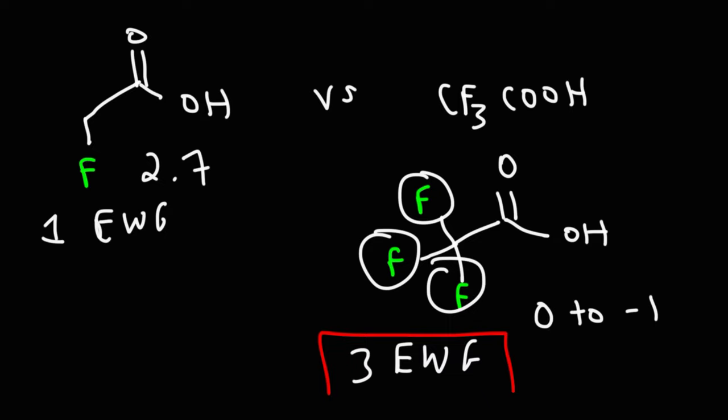Those are the three factors that you need to be aware of when considering the effect of an electron-withdrawing group on an acid. Anytime you have an inductive effect problem, pay attention to those three factors: the type of EWG, how many EWGs you have, and the proximity of the EWG to the acidic functional group.